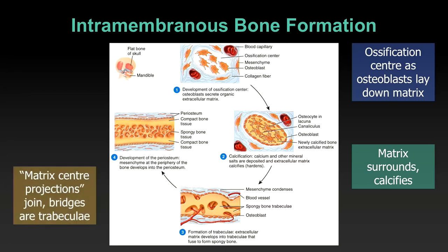Multiple ossification centers are produced, grow, and join. You can think of them as creating projections outward. As these projections meet and fuse, the bridges between centers are the trabeculae — almost like icicles. They are the projections of spongy bone; this is how spongy bone is formed. These projections grow outward, join, and create many narrow caverns in between where blood vessels and marrow can diffuse.